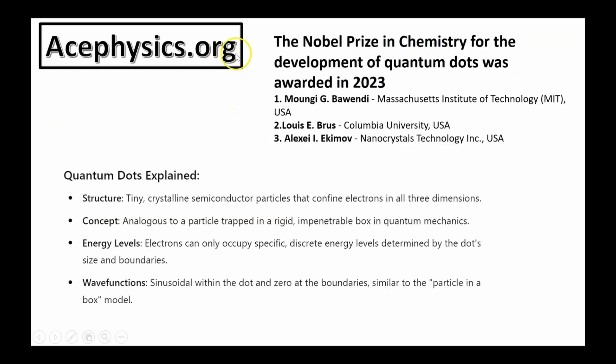And to conclude, I just want to tell you that the Nobel Prize in Chemistry for the development of quantum dots was awarded in 2023. What are quantum dots? The structure of quantum dots are tiny, crystalline, semiconductor particles that confine electrons in all three dimensions. They're analogous to particles trapped in a rigid, impenetrable box in quantum mechanics. Electrons can only occupy specific discrete energy levels determined by the dot's size and boundaries. The wave function of the electrons are sinusoidal within the dot and zero at the boundary, similar to a particle-in-a-box model. This particle-in-a-box has actually been created by making very tiny semiconductor particles,